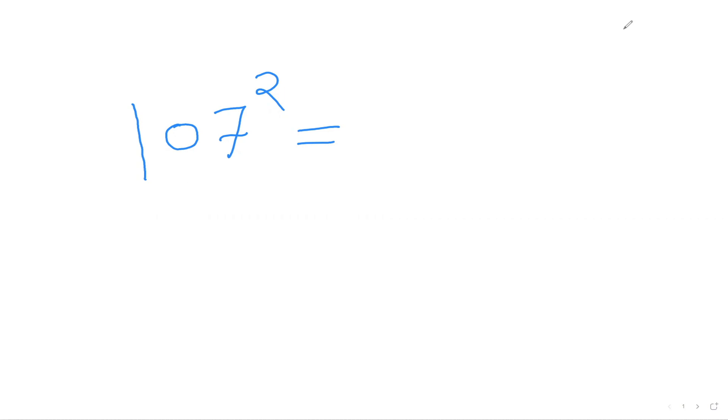So let's say if I want to figure out what is 107 square. The very first step is we're going to find out what is the difference of this number from 100. So the difference of 107 and 100 is 7.